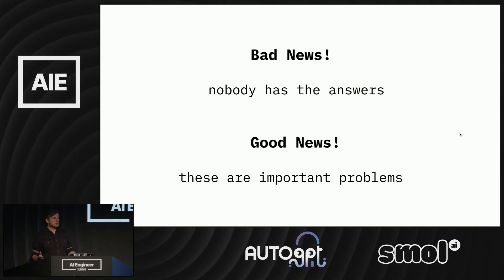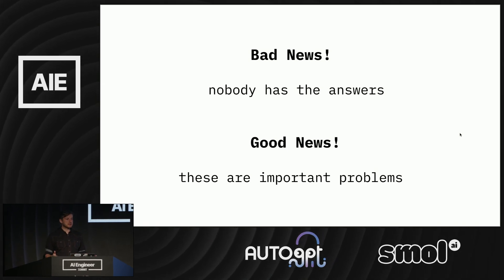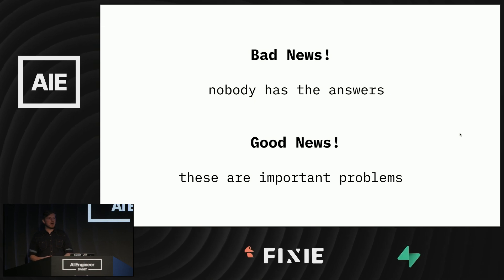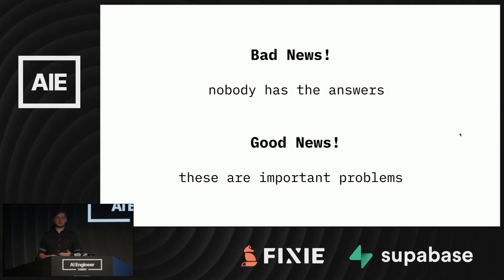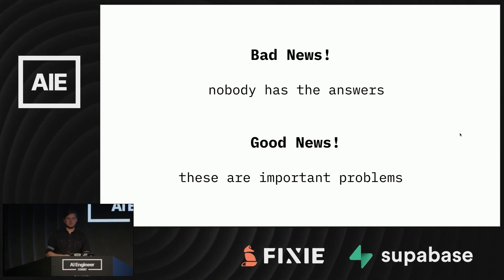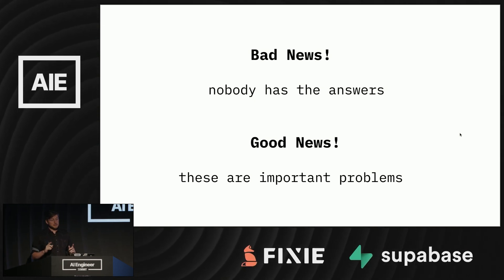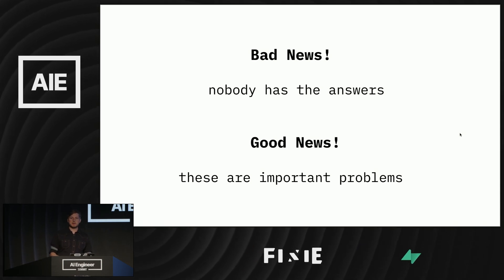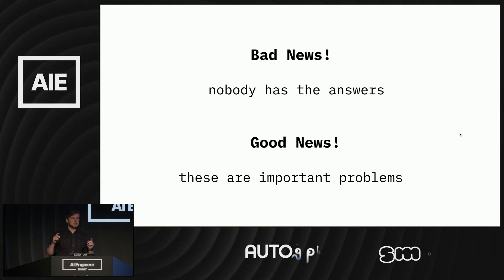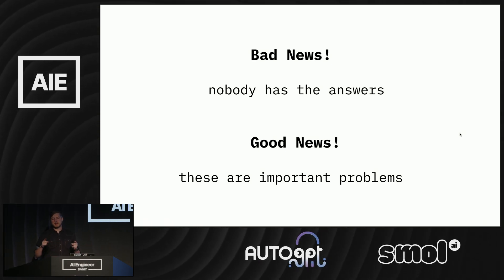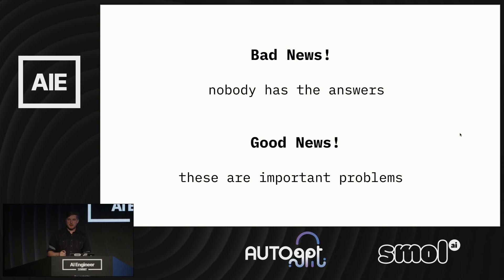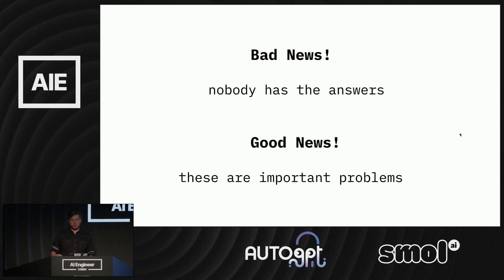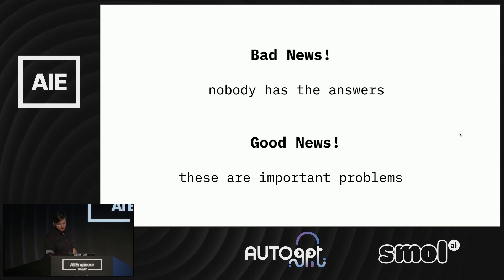So the bad news is nobody really has the answers. Despite the fact that information retrieval is a long-studied problem, there isn't a great solution to these problems today. But the good news is that these are important and increasingly important problems, and we see much more production data rather than academic benchmarks that we can work from to solve some of these for the first time.